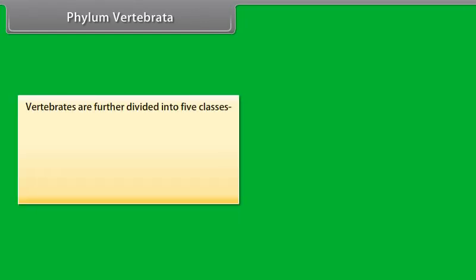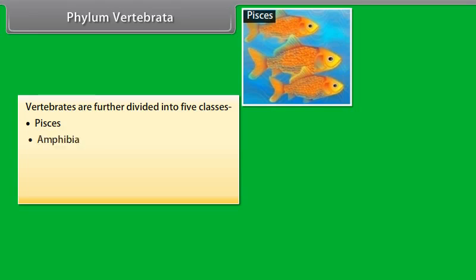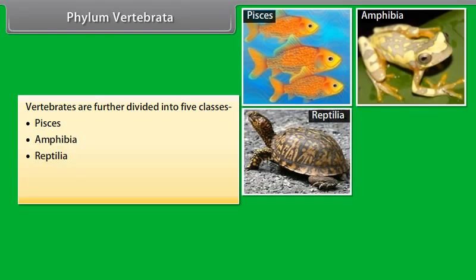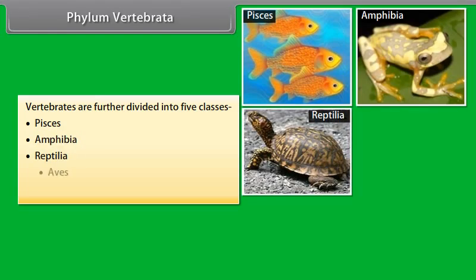Vertebrates are further divided into five classes: Pisces, Amphibia, Reptilia, Aves, and Mammalia.